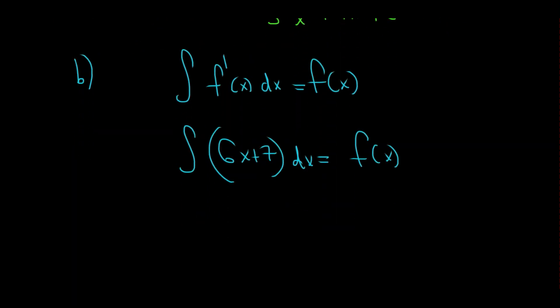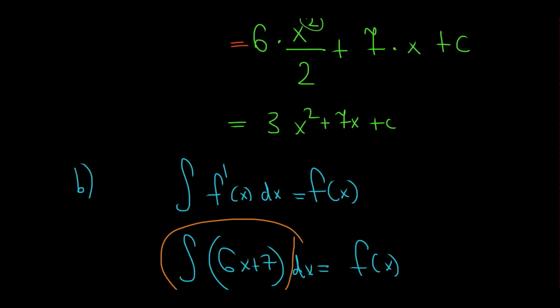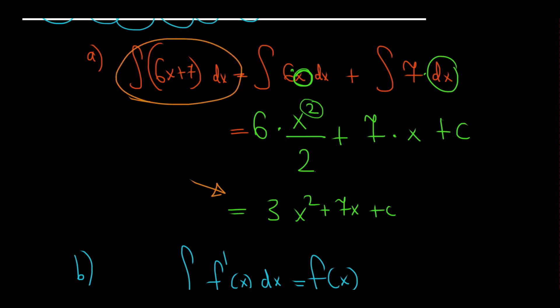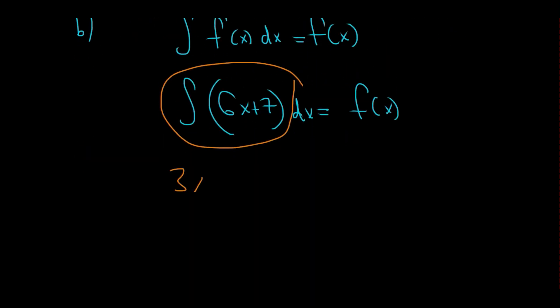We're gonna do the following. The integral of this is just the result from above. We did it in part a. Check this out. We solved it over here. That's 3x squared plus 7x plus c. 3x squared plus 7x plus c equals to f of x.